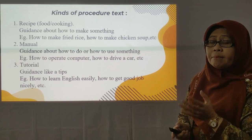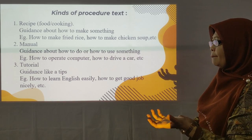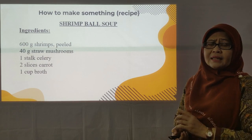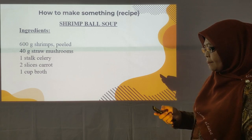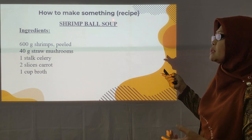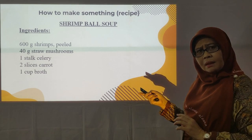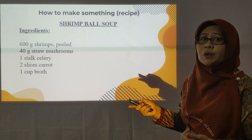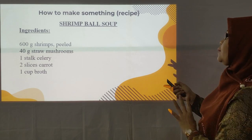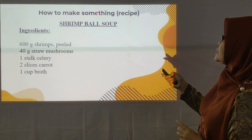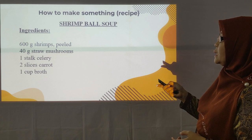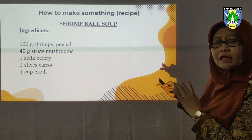Now let me go through the examples one by one. The first example is a recipe — how to make shrimp ball soup. Do you remember about the generic structure? That is a goal or aim, then ingredient or material, and then the last is steps. The goal or aim here is 'how to make shrimp ball soup'.